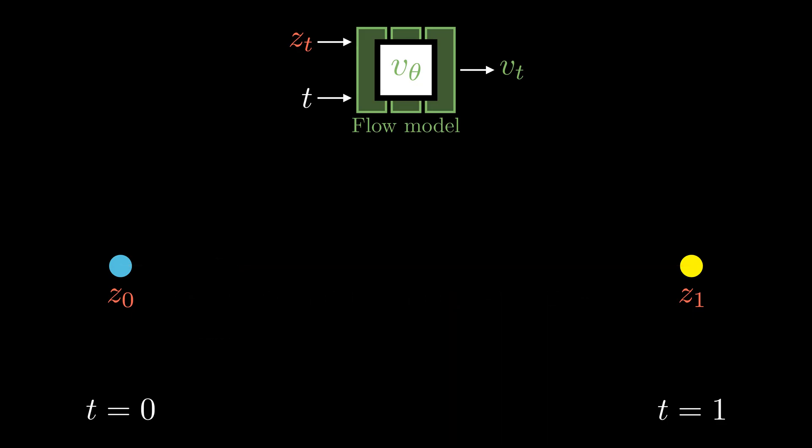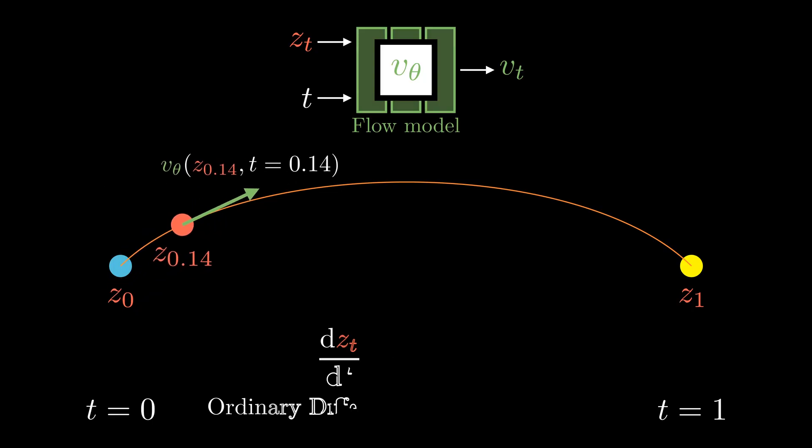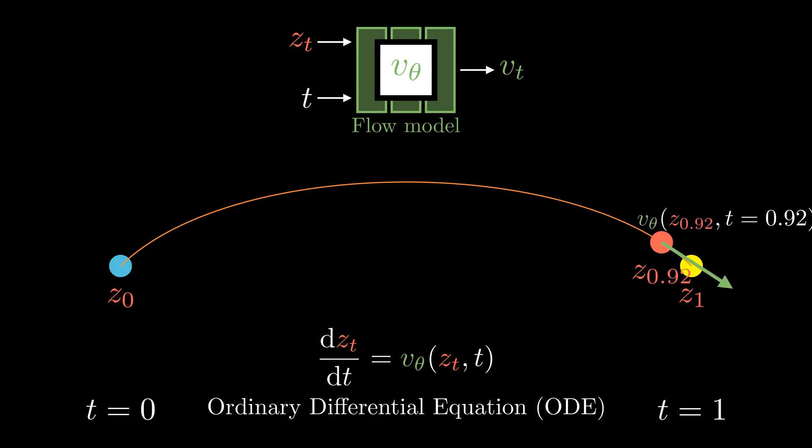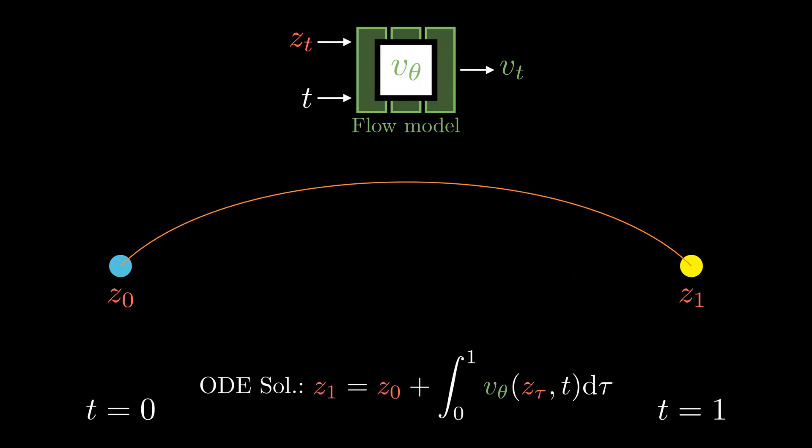But what if the velocity field is curved? The point position zt can be described by an ordinary differential equation. This simply means that the change of position zt with respect to time follows the predicted velocity by the flow model. The solution to this ODE involves integrating the predicted velocity over time. In practice, we need to break this down into discrete steps.